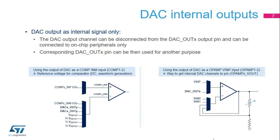Connecting the internal DAC output to a comparator INM input defines the reference voltage of the comparator. Connecting the internal DAC output to an op-amp VINP input can be used to bias the op-amp DC point or amplify the analog voltage.